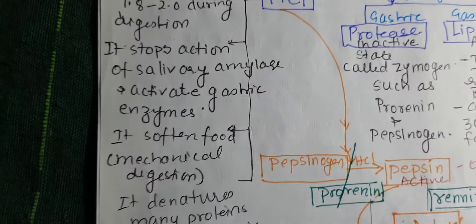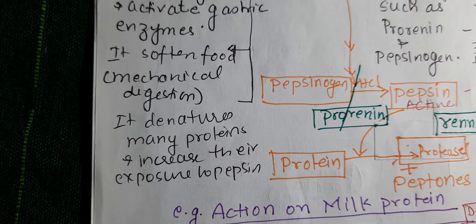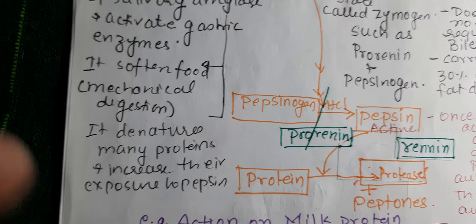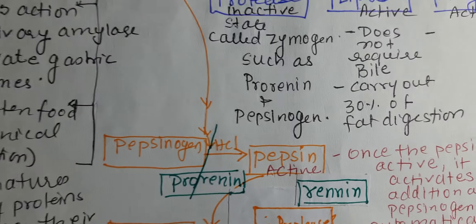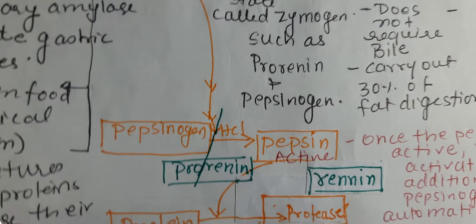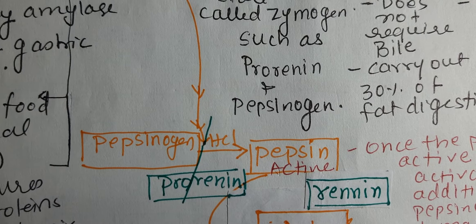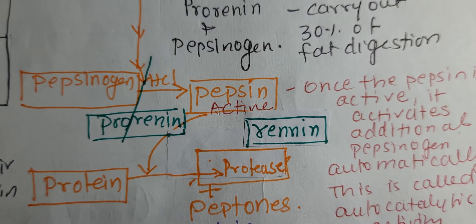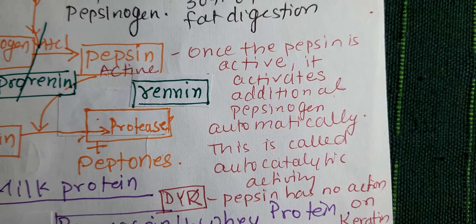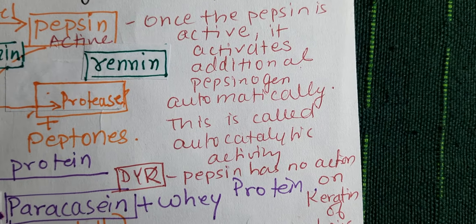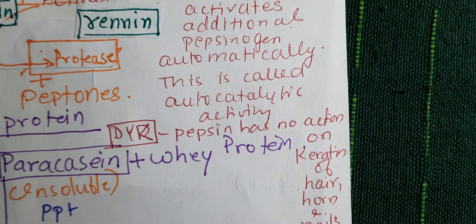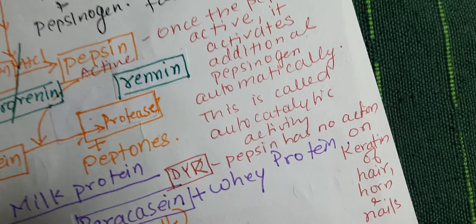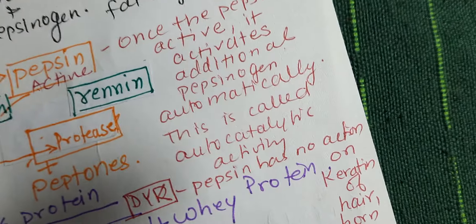HCl softens the food, denatures many proteins, and increases their exposure to pepsin — the proteolytic enzyme. HCl activates pepsinogen to pepsin and also activates pro-rennin to rennin, both of which are proteolytic enzymes. Pepsin acts on proteins and converts them to peptones or proteoses. Once pepsin is active, it activates additional pepsinogen automatically — this is called autocatalytic activity. Pepsin has no action on the protein keratin, found in hair and nails.